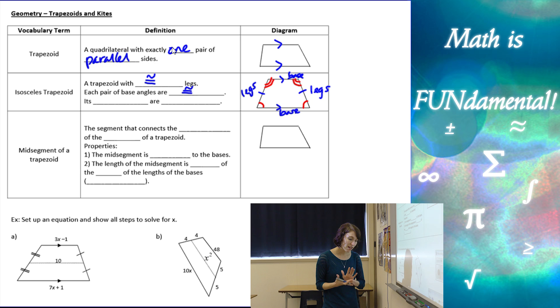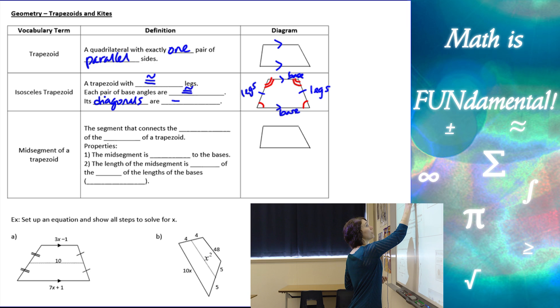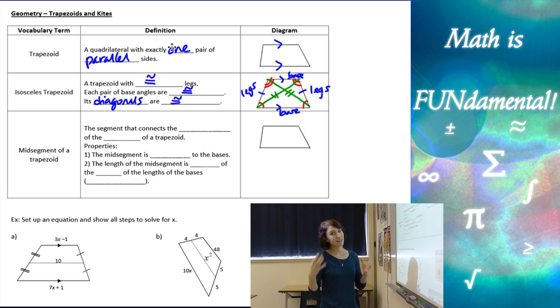And we know in an isosceles trapezoid that its diagonals are congruent as well. So here, let's see if I can draw this. We've got one diagonal here, another diagonal here, and this diagonal is congruent to that diagonal. So all that stuff only happens in an isosceles trapezoid, so make sure you're given that information before you assume anything.